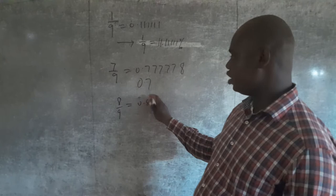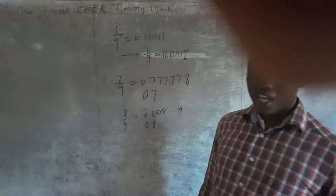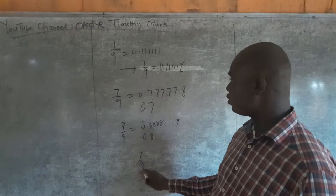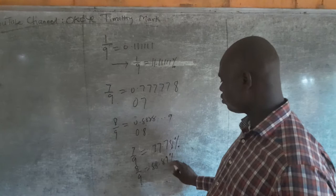Check 8/9: that is 0.8888. You end it with 9 because that was mixed. We write it as 0.8 with a dot on 8 in mathematical language. Hence 7/9 is 77.77%, and 8/9 is 88.89% when expressed as percentages.